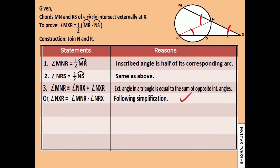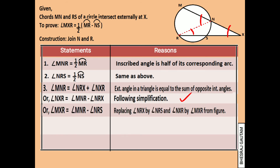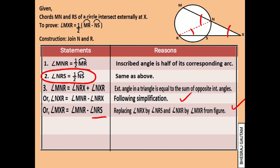Since angle NXR is the same as angle MXR, and angle NRX is the same as angle NRS, we can rewrite the above step as angle MXR is equal to angle MNR minus angle NRS. Now from statements one and two, we replace angle MNR by half of arc MR and angle NRS by half of arc NS.